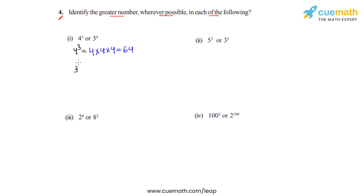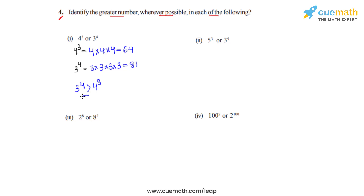Now we will expand 3 raised to 4 — that is, 3 is to be multiplied 4 times. Now 3 threes are 9, 9 threes are 27, and 27 times 3 is 81. So from the expansions we can clearly see that 3 raised to 4 is greater than 4 raised to 3. This is the answer for the first bit.